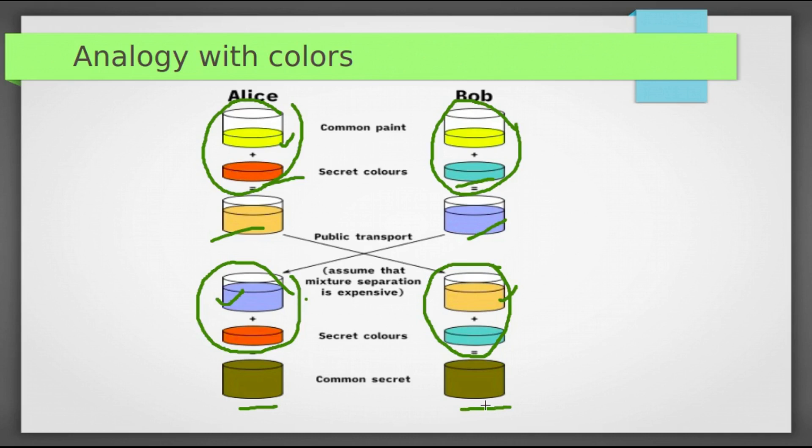If the third party, let's say Eve listens in the traffic, she can only know the common color yellow and first mixed colors orange tan and light blue. But it would be difficult for Eve to determine final secret color, this pine green.